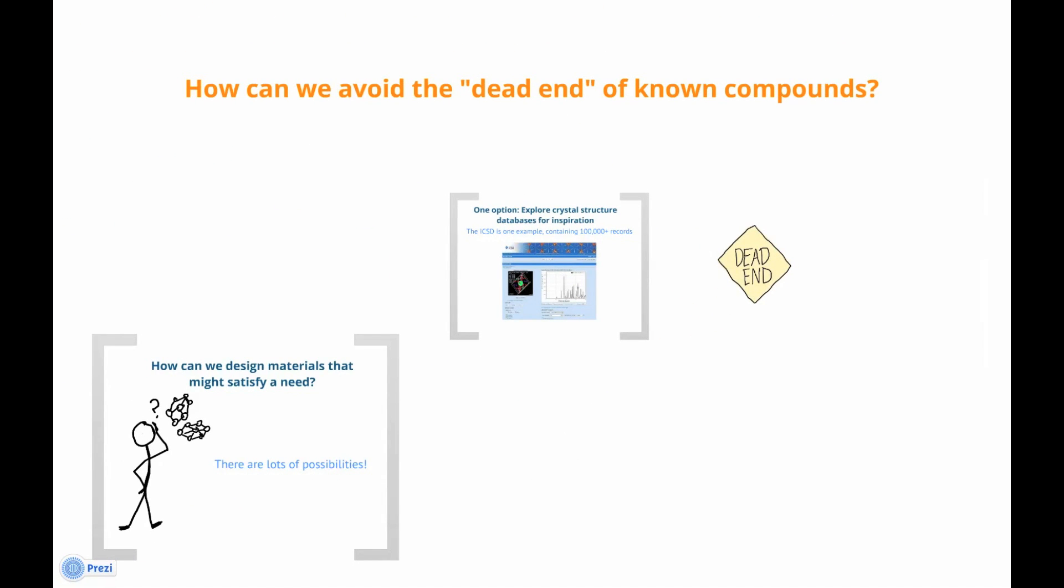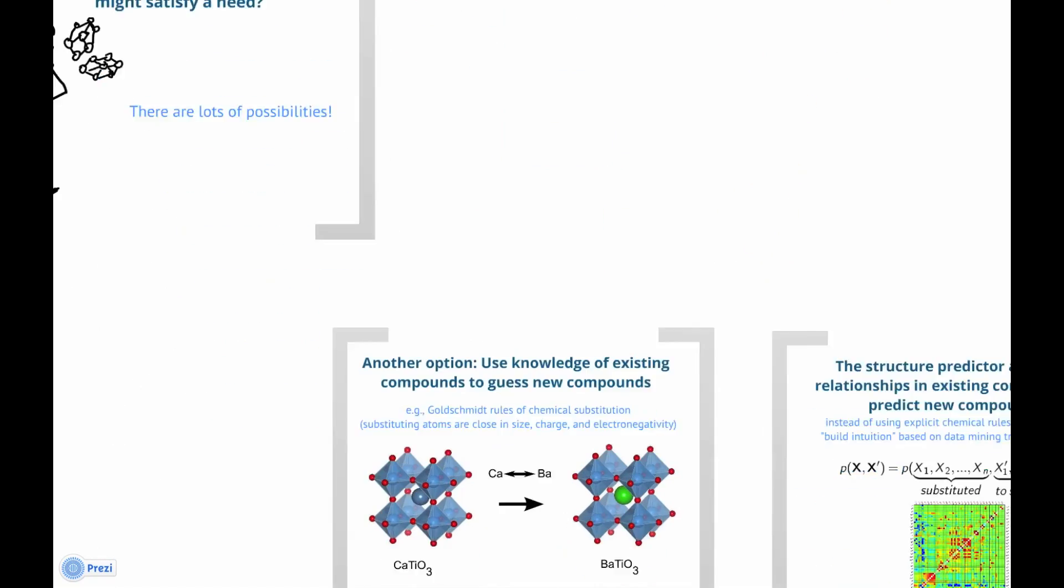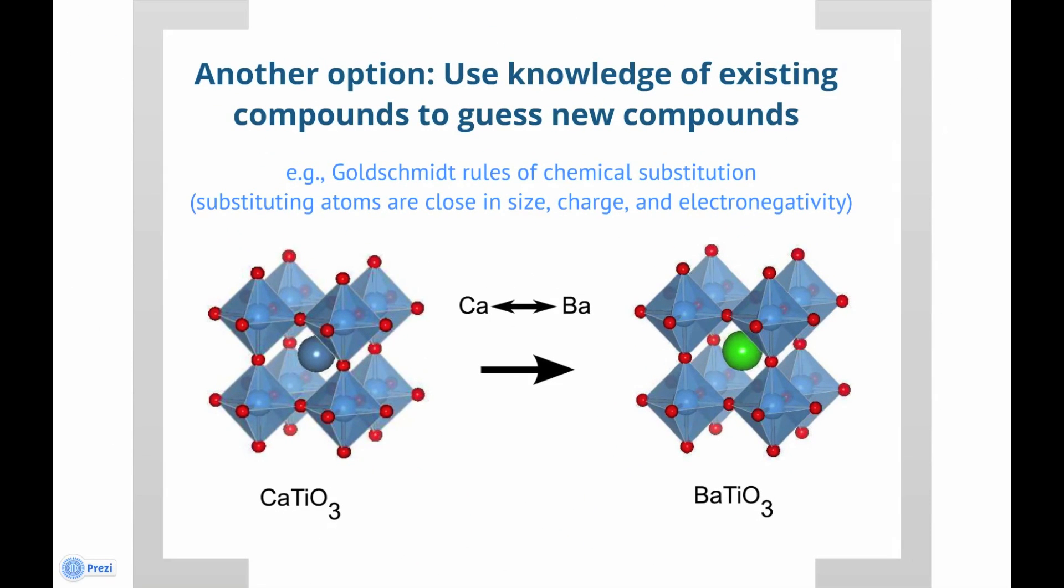In that case, we need to invent new compounds that have never been seen before. Traditionally, chemists invent new compounds based on their intuition or through basic chemical rules. Often, the rules are used to determine how existing compounds might be modified to create new compounds.